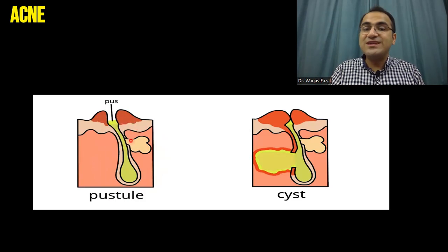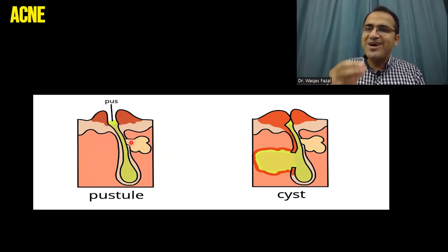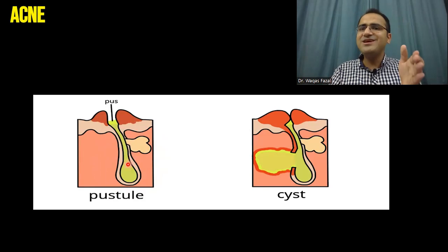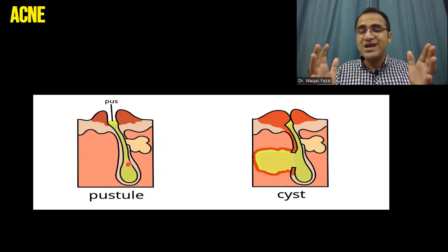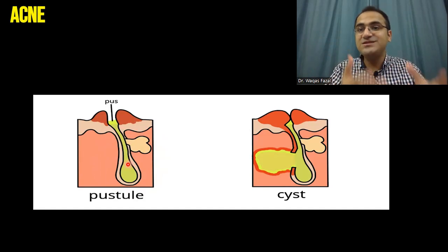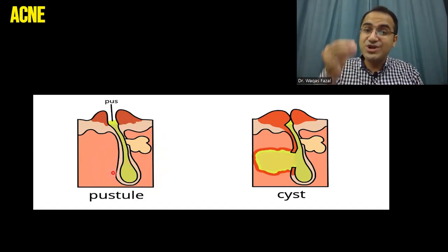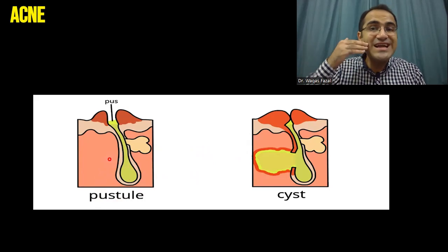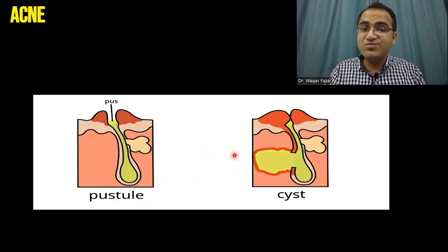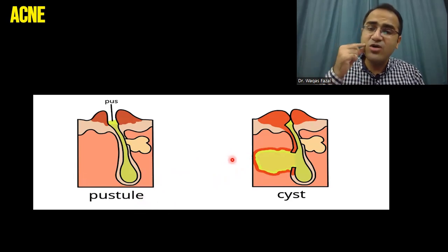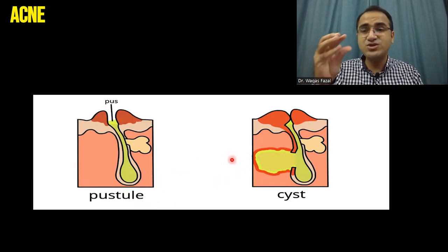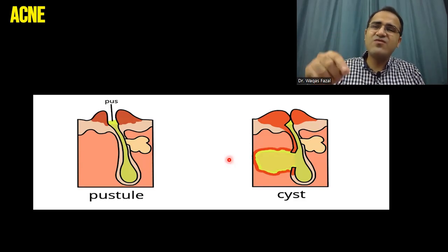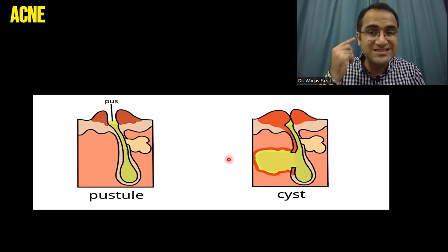Within these glands where sebum has been blocked, a bacteria called Cutibacterium acnes proliferates because whenever there is a block, infection occurs behind it. Cutibacterium acnes oxidizes the sebum and results in the formation of pus. The formation of pus causes aggravation of the acne. Sometimes this pus exceeds to an extent that it forms cysts and abscesses in the skin — huge collections of pus — which is the most severe form of acne. When these cysts rupture, they cause permanent damage to the skin, resulting in scarring.